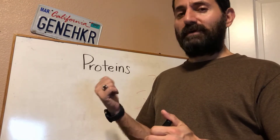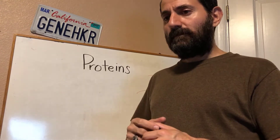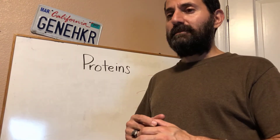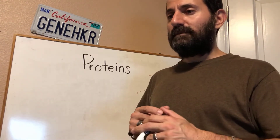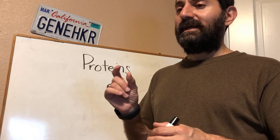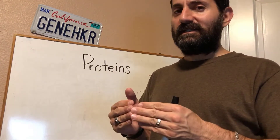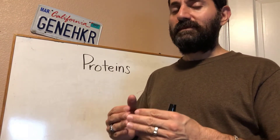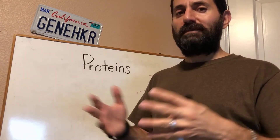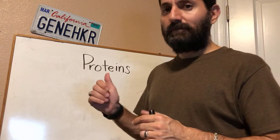The protein is a biomolecule and it is also a macromolecule, because it is made up of monomers called amino acids. Those monomers get linked together to form the polymer, which is called a protein or a polypeptide.